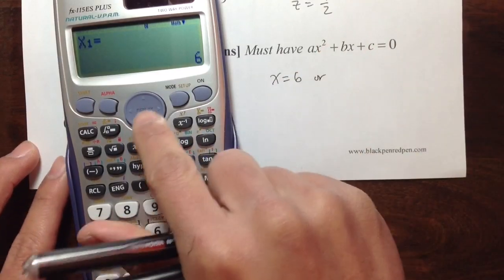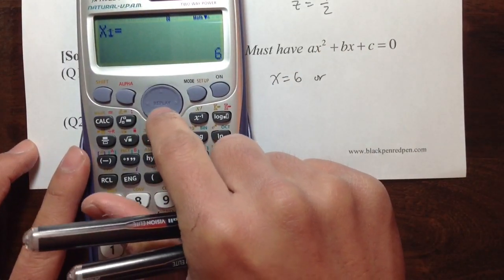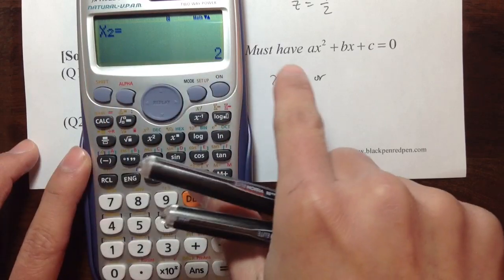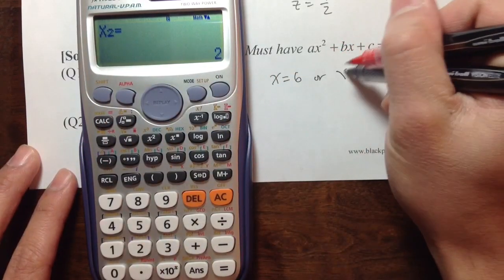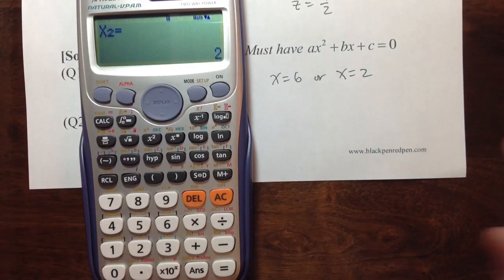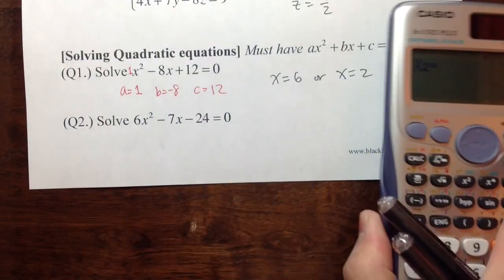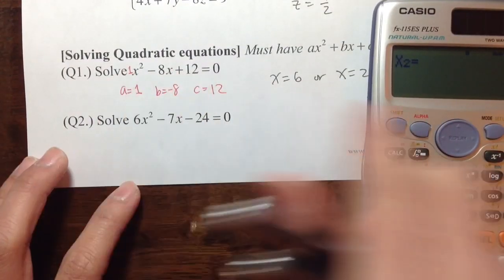Or we have the second answer as well. Press down, x₂, that's the second answer. That means x can be either 6 or x = 2. Both answers will work. 2 and 6 are both solutions of this equation.